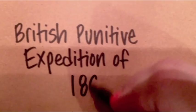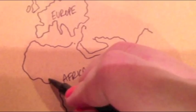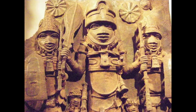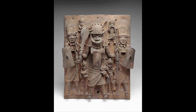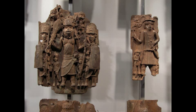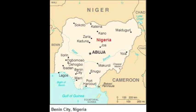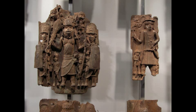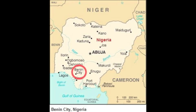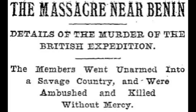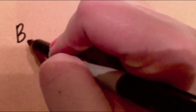Some political context is necessary before looking at the Oba plaques. In the late 1800s, Britain wanted to expand their trade into western Africa. The British sent an envoy to discuss trade possibilities with the sitting Oba, but were informed to stay away because the Oba was participating in annual sacrifices in honor of his ancestors. The unarmed British envoy did not heed this advice, and the group of nearly 300 was ambushed — nearly 250 were killed. This led to the British punitive expedition of 1897, in which over 700 men captured, looted, and burned the Oba's palace.